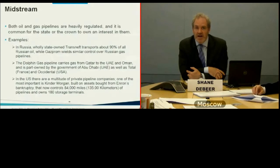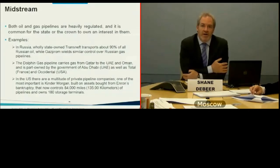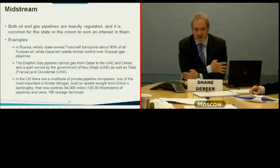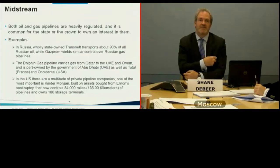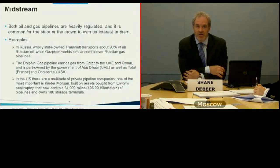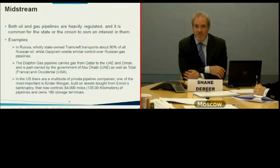The United States is the outlier, with a multitude of private pipeline companies. One of the most important is Kinder Morgan, built on assets bought from Enron — the energy company that went bankrupt spectacularly, known at the time largely as a trader in oil and gas derivatives but which also controlled an enormous amount of infrastructure. Kinder Morgan now controls 84,000 miles (135,000 kilometers) of pipelines and owns over 180 gas storage units.